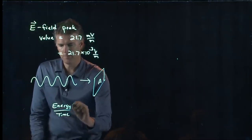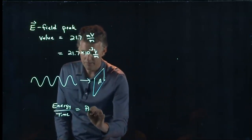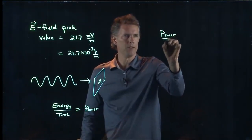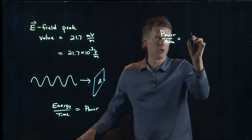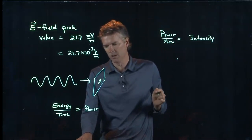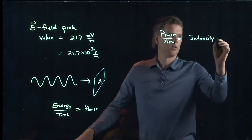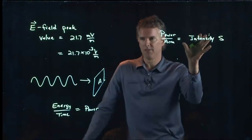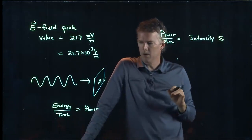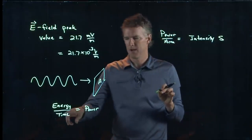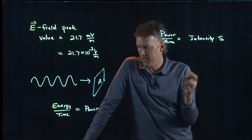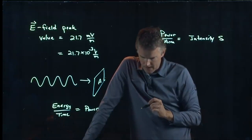When we talked about energy per time, that was power. And when we talked about power per area, that was what we called intensity. Now yesterday we were using intensity as S. In your book I think they use intensity as I, so just make sure you're aware that where we're using S they were using I. Energy per time is power; if I divide that by area I get intensity, and that's exactly what they're looking for in this problem.